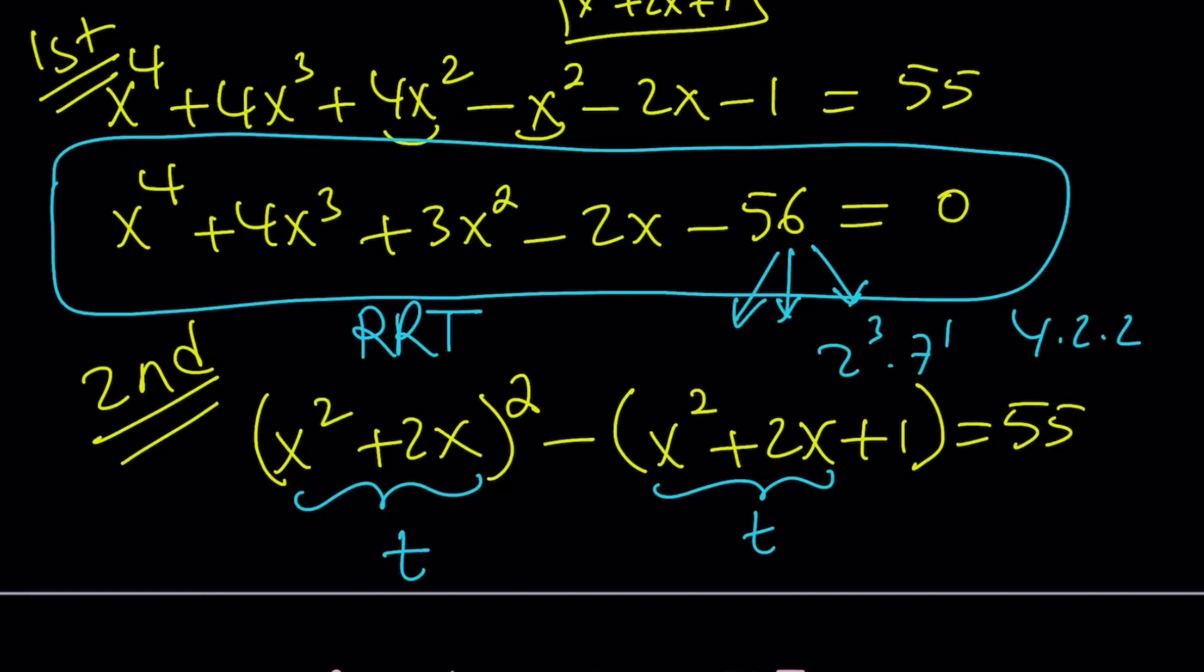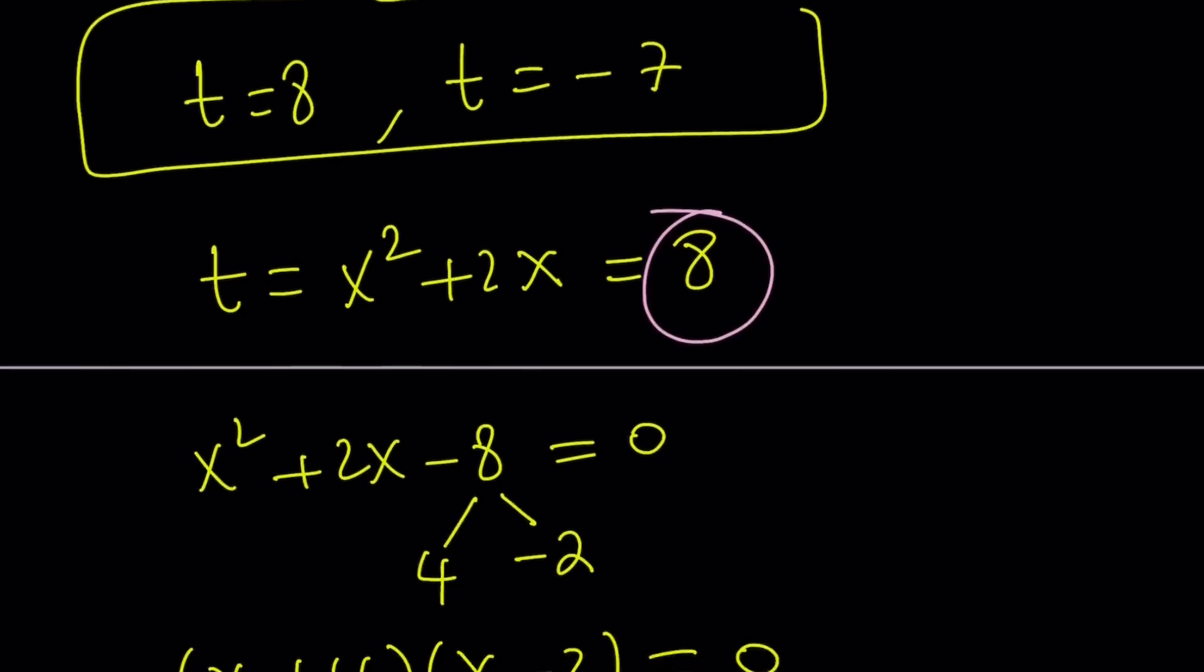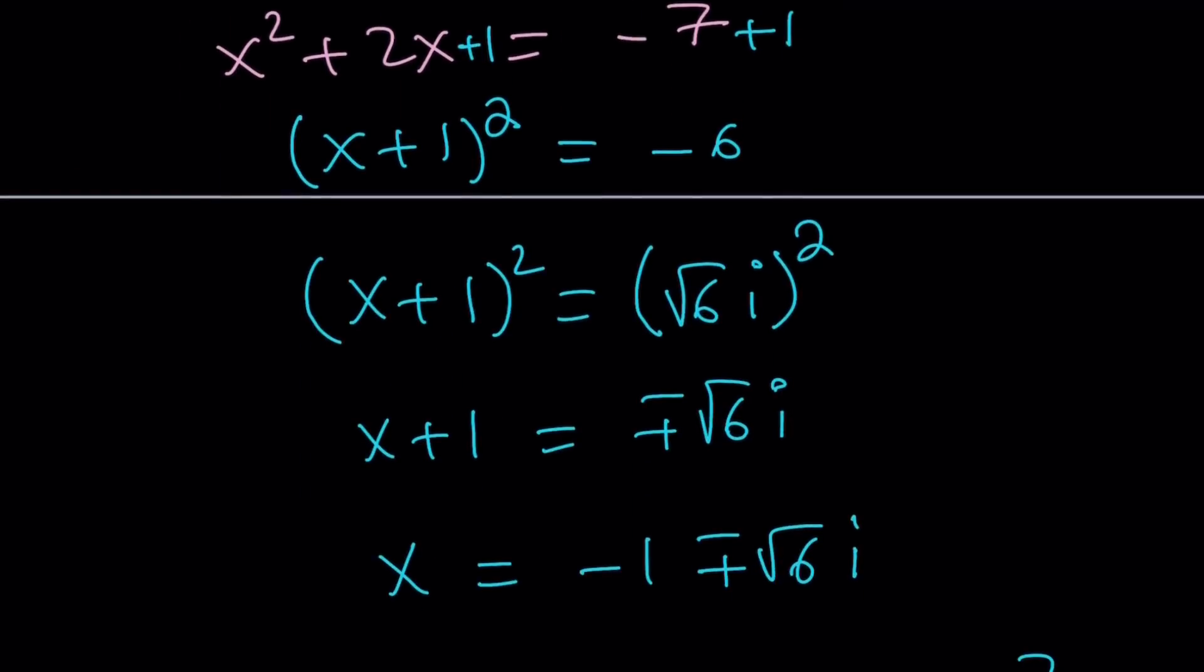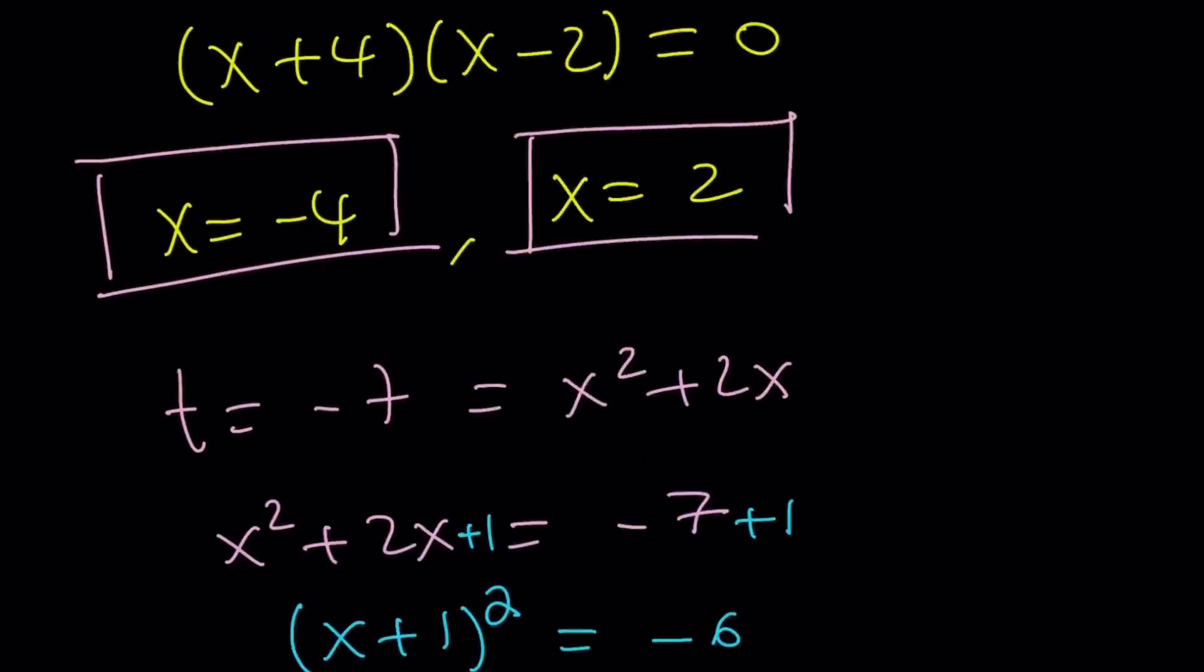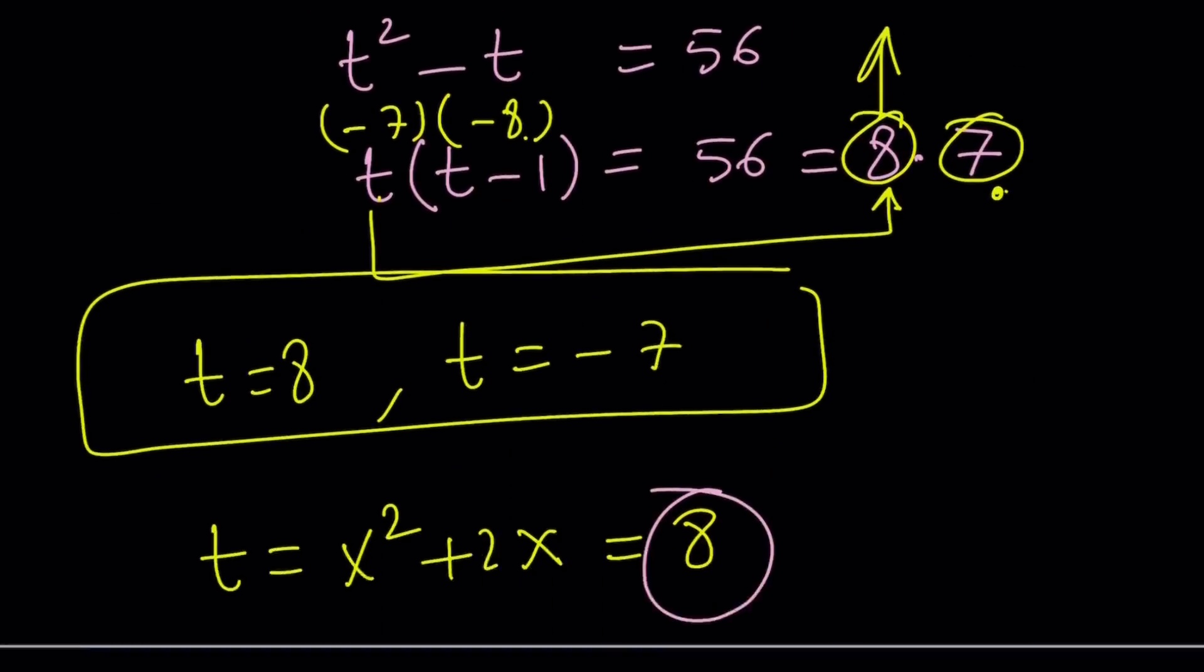But guess what? Once you find the factor, and looking at the results, I can say that, hey, x = 2 is a good candidate. I would probably check that first, like after 1 and -1. That's one of the things you have to look at the coefficients. Anyways,